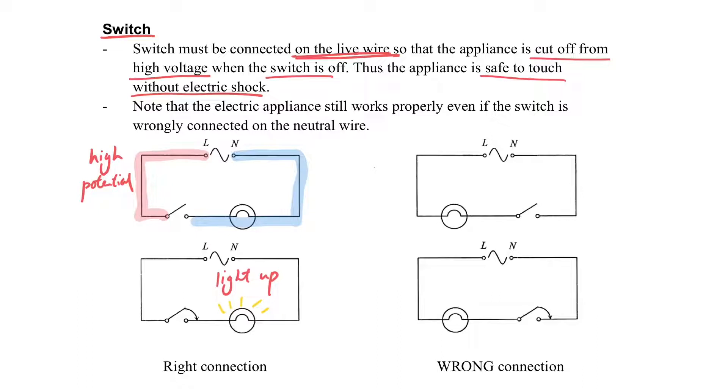Then let's compare with the wrong connection on the other side. You can see that the switch is on the neutral wire. Then when the switch is open, the live wire and also the electrical appliances are at the high potential. So it is not safe to touch it.